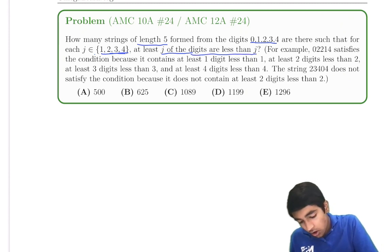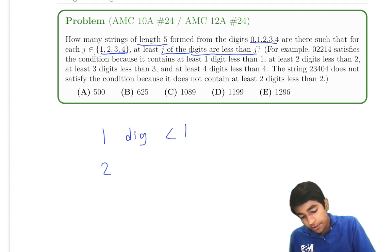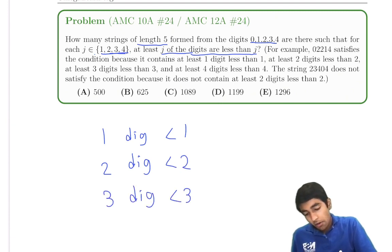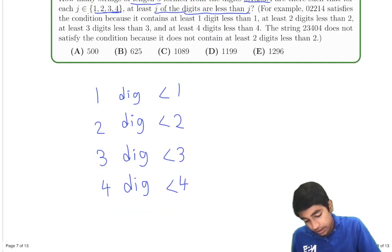What does this condition mean? At least one of the digits is less than 1. At least 2 of the digits are less than 2. At least 3 of the digits are less than 3. At least 4 of the digits are less than 4. And at least 5 of the digits are less than 5.